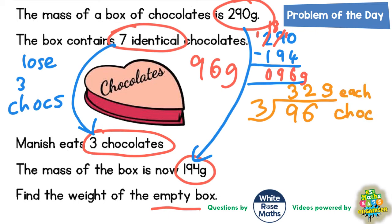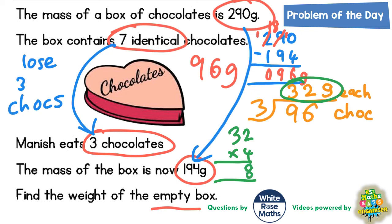Now we started with seven chocolates and we've just lost three, which means there must be four more chocolates still in the box, and we now know that each one is worth 32 grams. So we need to work out four lots of 32 grams. 32 times 4 — four twos are eight, four threes are twelve — so the remaining four chocolates in the box weigh 128 grams.